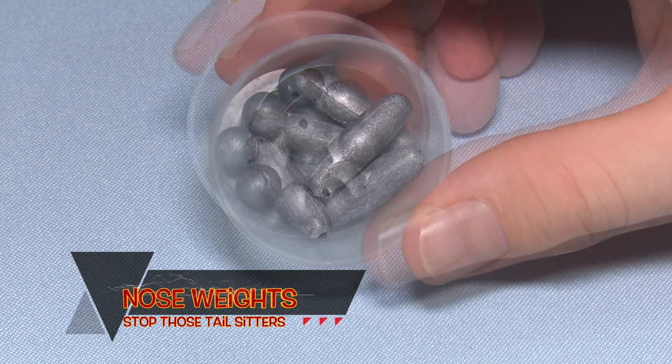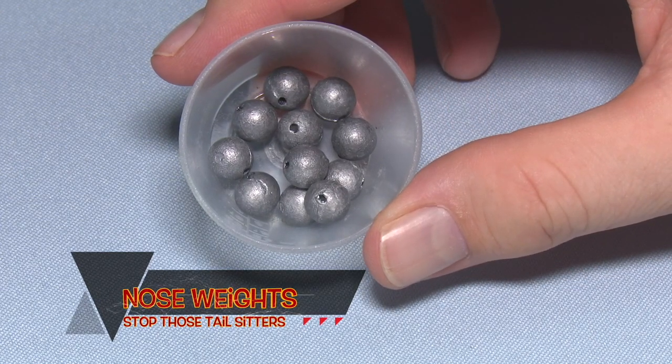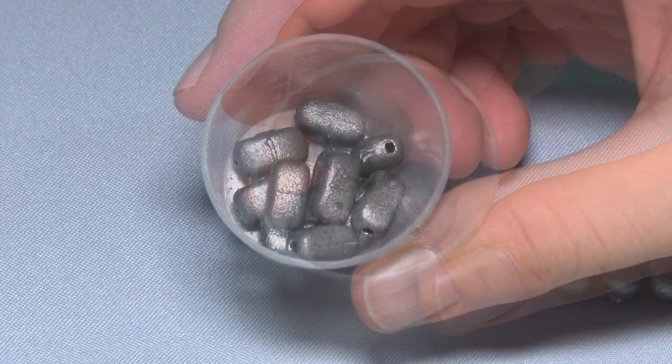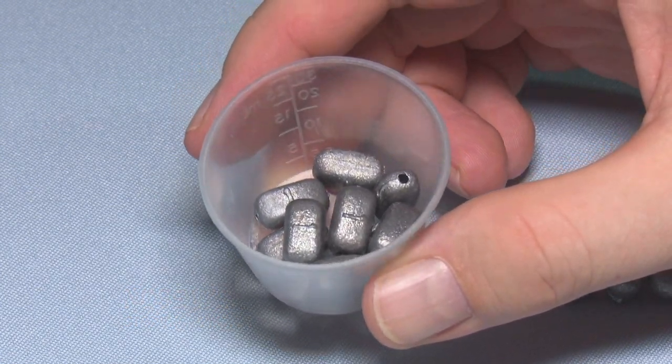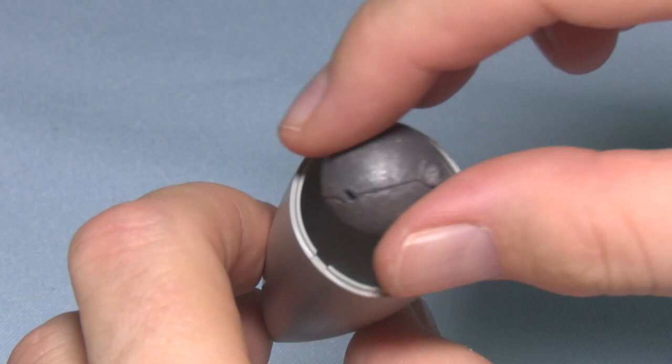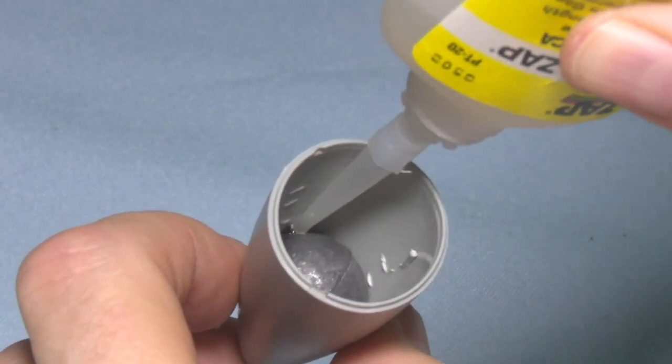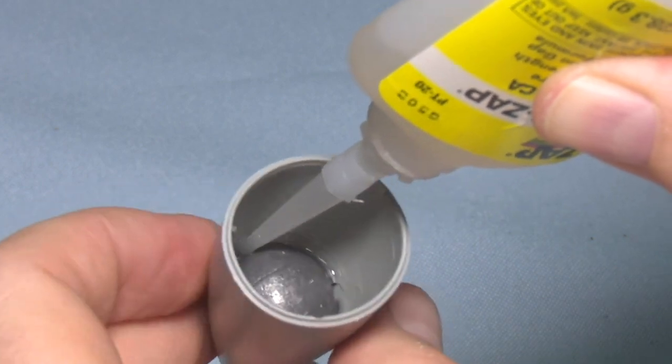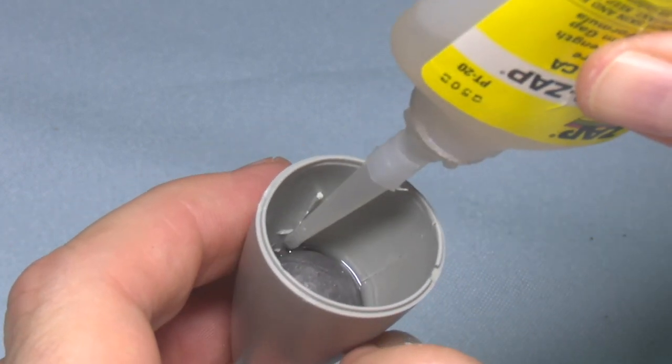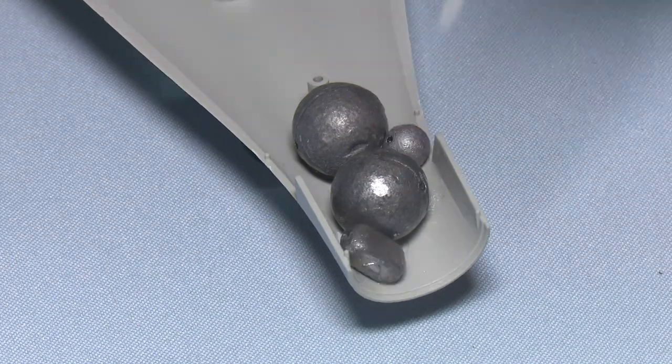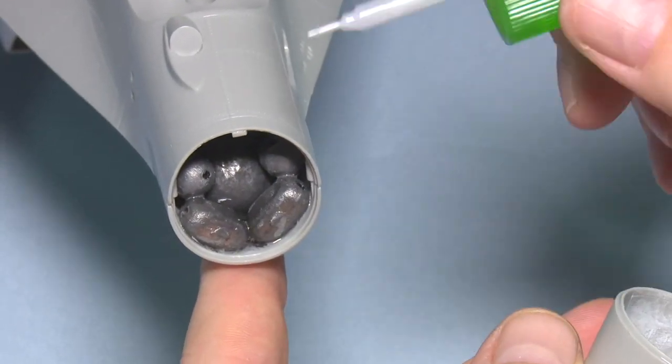If you're building a traditional World War II plane that sits on its tail, that's fantastic. But when you're building a jet with a front nose wheel and it sits on its tail, it's a disaster. So often you will need to use various different lead weights. I normally just get fishing weights just found in your local fishing store and fill up the front area of the nose.